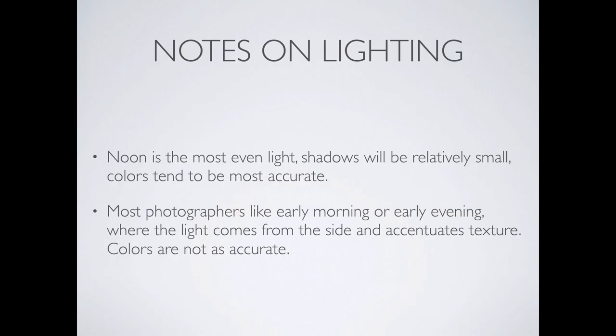Some notes on lighting. Noon is always the most even time for light — the most consistent when you're photographing colors. Most photographers, on the other hand, like to get up early in the morning or shoot late in the evening, right in that twilight time frame. You've seen lots of architectural shots — you look at an architectural record magazine and several of the pictures are twilight scenes with lights in the building. Photographers like this time because you get lots of different lighting conditions, long shadows, and an exciting type of image.